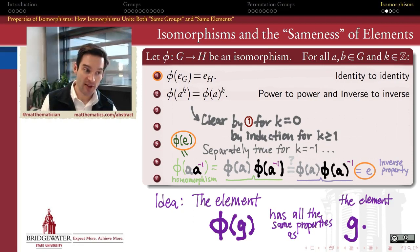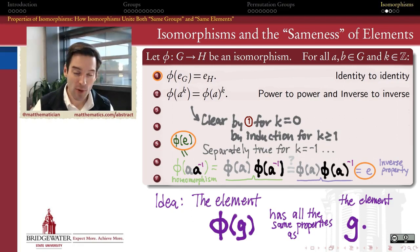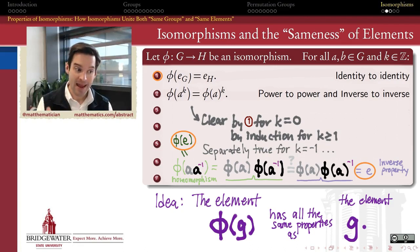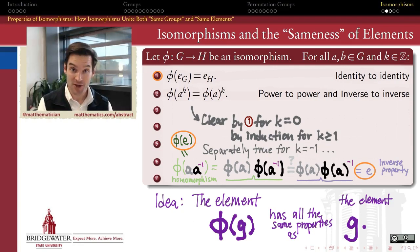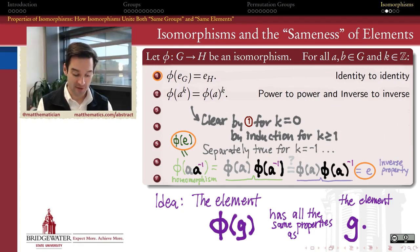Therefore, isomorphisms not only send identity to identity and powers to powers — isomorphisms also carry inverses to inverses. Something to notice about this proof is I never used the fact that phi is a bijection; I only had to use the inverse property in any group and the homomorphism property. So these statements are true not just for isomorphisms, but also for functions which meet the homomorphism property but don't meet the bijection criteria — those are called homomorphisms of groups — and therefore they also satisfy properties one and two.